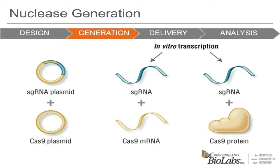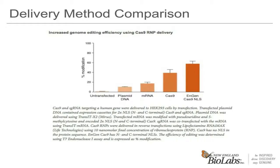We wanted to highlight an experiment comparing the different delivery methods of Cas9 and guide RNA. The results show different editing efficiencies from targeting the same locus with different delivery methods. We compared plasmid-based expression of sgRNA and Cas9 with the mRNA and guide RNA combination, followed by the RNP methods. With the RNPs, we compared both with and without nuclear localization signals. Our NGEN Cas9 has one NLS on each terminus. The RNPs outperformed both of the other two methods, with the NLS's further increasing editing efficiencies.